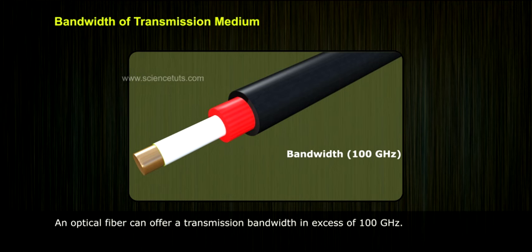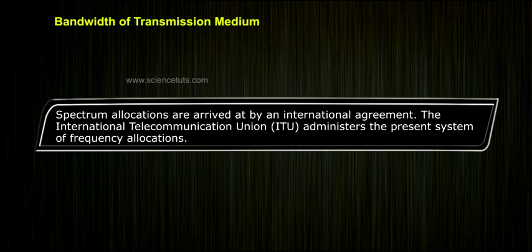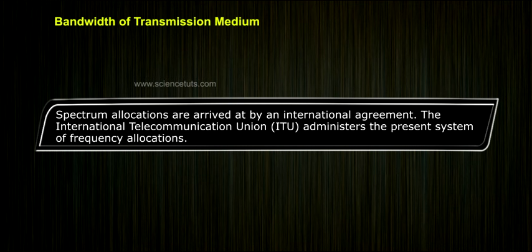An optical fiber can offer a transmission bandwidth in excess of 100 gigahertz. Spectrum allocations are arrived at by international agreement. The International Telecommunication Union, ITU, administers the present system of frequency allocations.